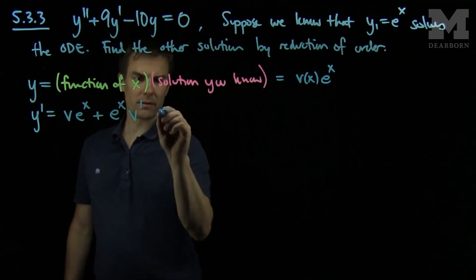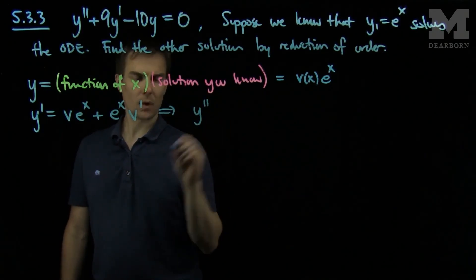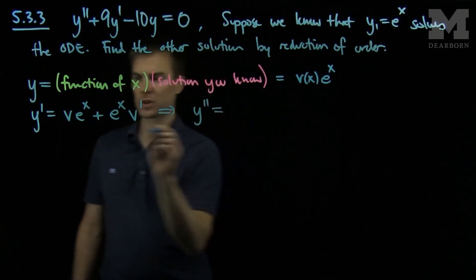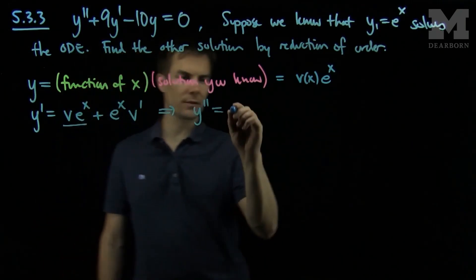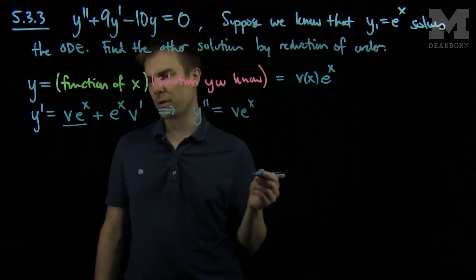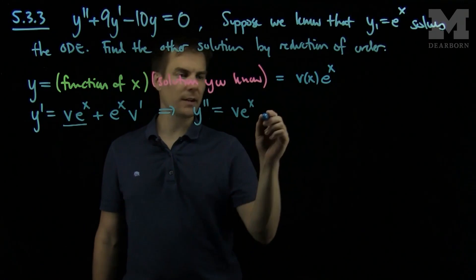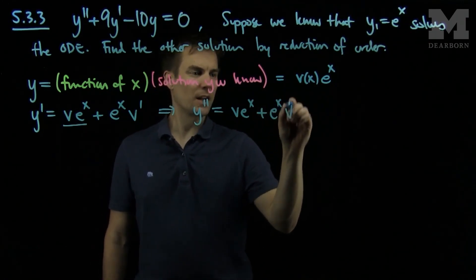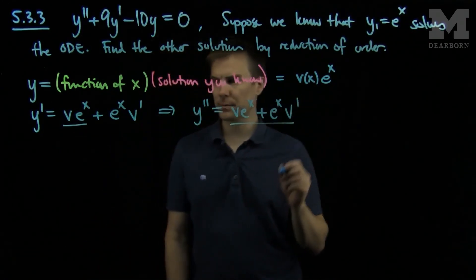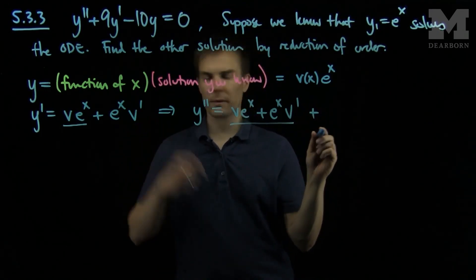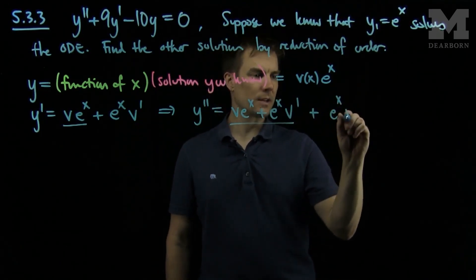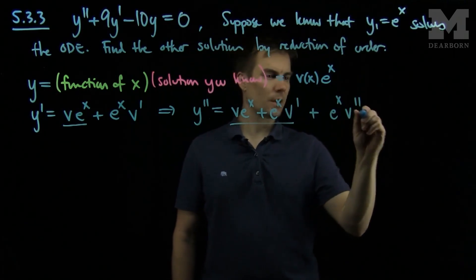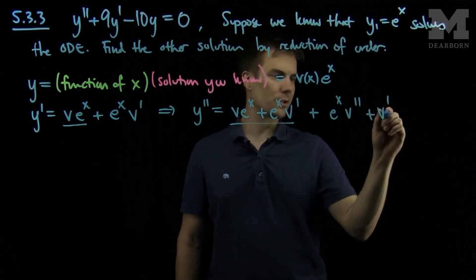Then I will do the second derivative, y double prime. We'll start by looking at this term over here. It's the first function times the derivative of the second function, plus the second function times the derivative of the first function. Those are the derivatives of those terms. Plus the first function times the derivative of the second function, plus the second function times the derivative of the first function.